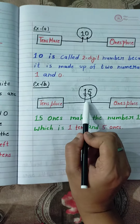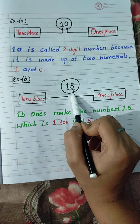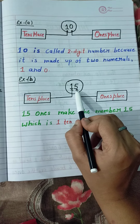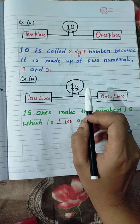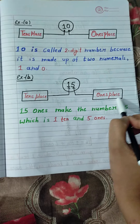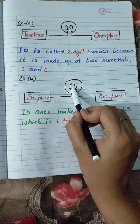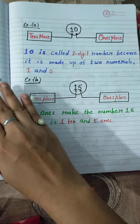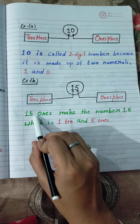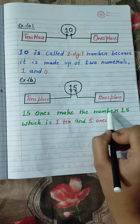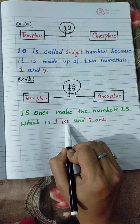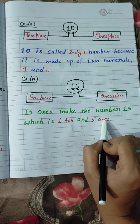One more example — this is 15. 5 is on your right side, so this is the ones place. And 1 is on your left side, so this is the tens place. 15 is made of 1 ten and 5 ones.